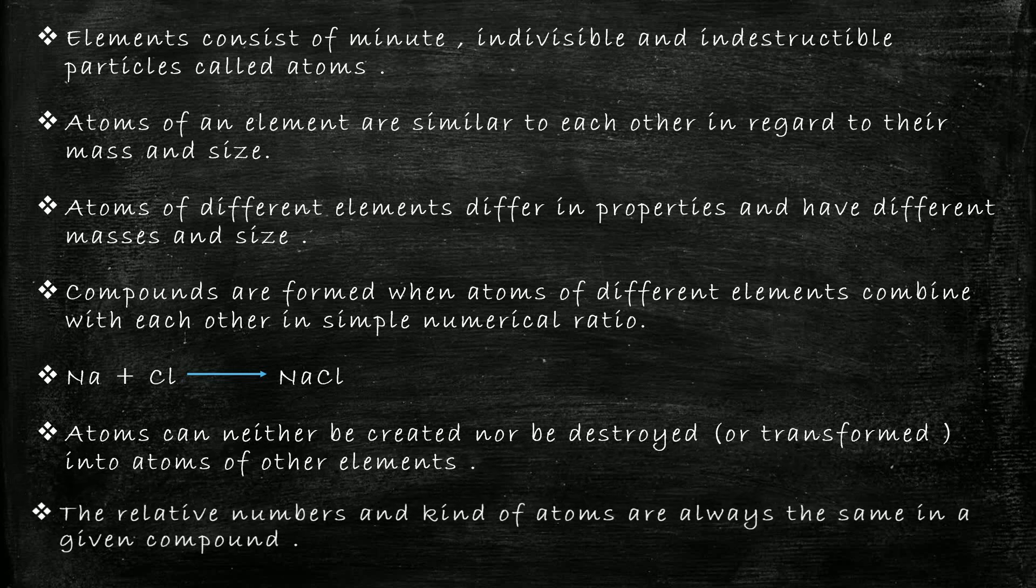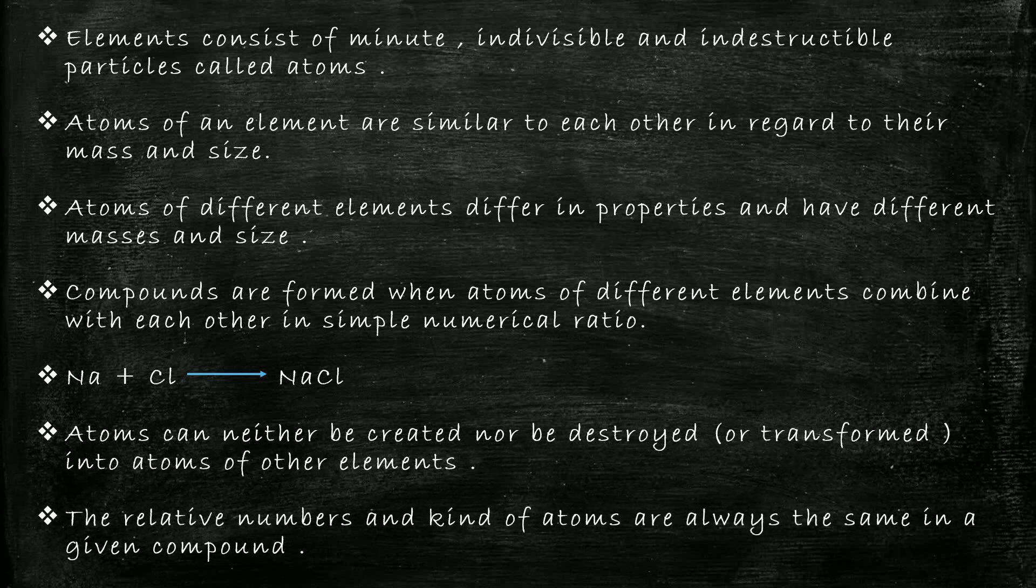The last point states that the relative numbers and kind of atoms are always the same in a given compound, which means that suppose you want a sodium chloride compound, there will always be sodium and chlorine present in that compound in a fixed ratio—one sodium and one chlorine. The number won't change; there will be one each.